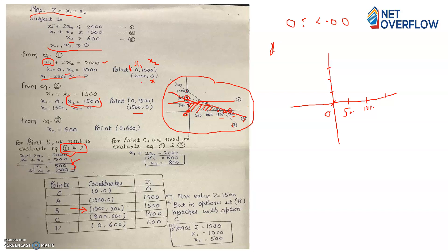Now evaluate the objective function z = x1 + x2 at each corner point. At O(0,0): z = 0. At A(1500, 0): z = 1500. At B(1000, 500): z = 1500. At C(800, 600): z = 1400. At D(0, 600): z = 600. The maximum value is 1500, achieved at both points A and B.